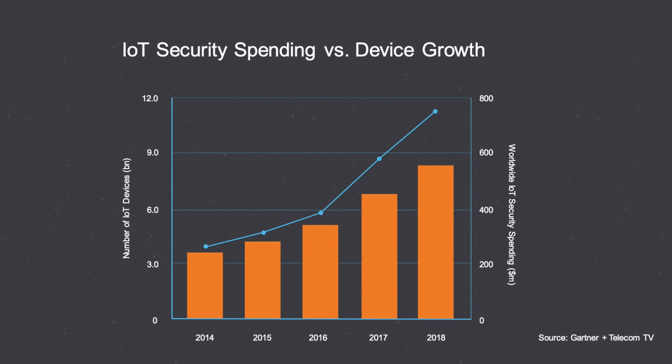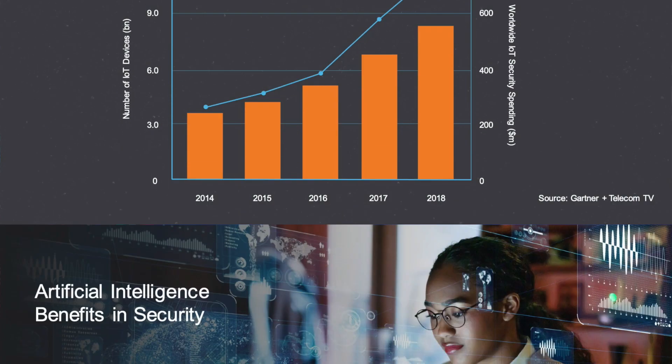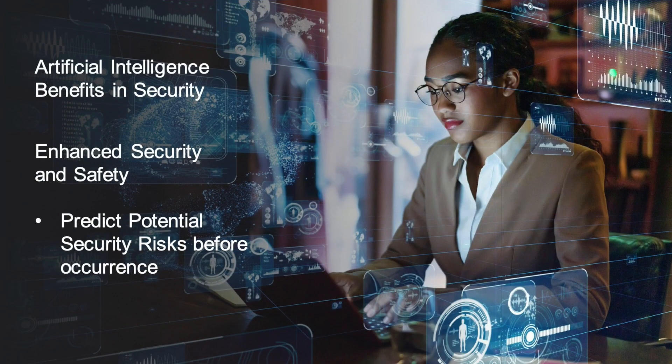There's an interesting chart that shows the bottom orange bars representing IoT security spending year by year, but the line represents how many devices are being put in place. You can see there's a clear gap between spend versus what they should be spending on IoT security. That's where artificial intelligence and machine learning come in — enhancing the security environment, looking for vulnerabilities, and making it as secure as possible.